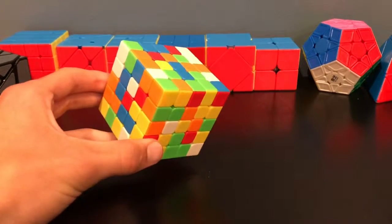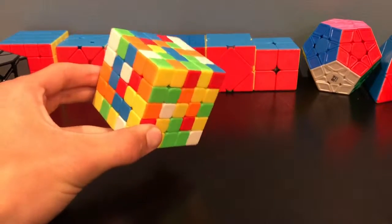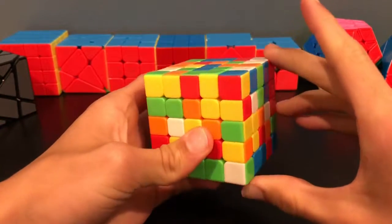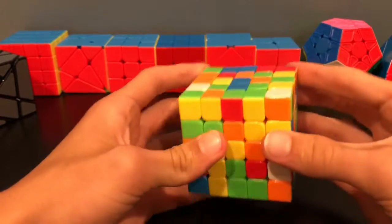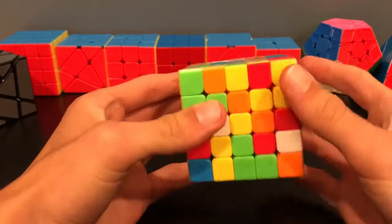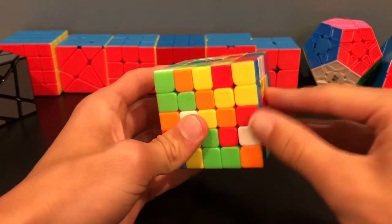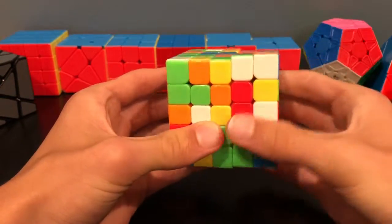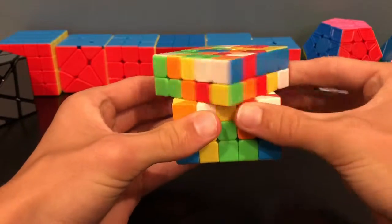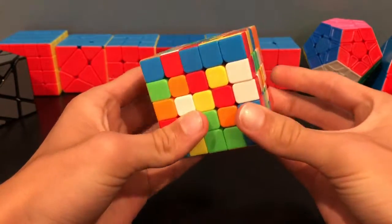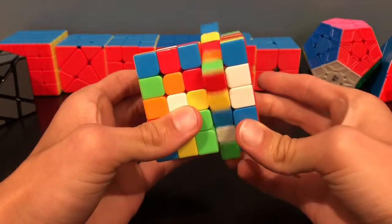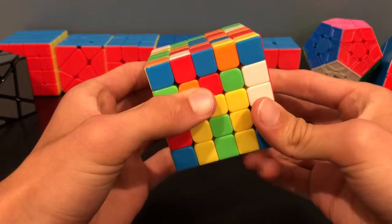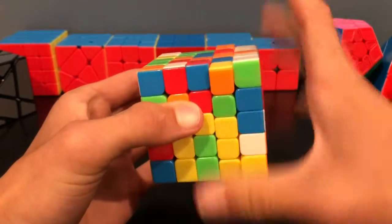The 5x5 also uses slightly different algorithm notation. If you remember from the 3x3, if you saw an R, that would mean right side clockwise, U would be top side clockwise. But now, if you see R wide, or R then lowercase w, you would turn two layers at once. Or if you saw U R wide, you would turn two layers at once this way. You'll probably never see an algorithm that uses just an inside layer, mostly because it's harder to do on a 5x5 Rubik's cube.